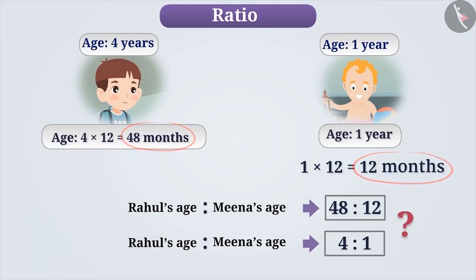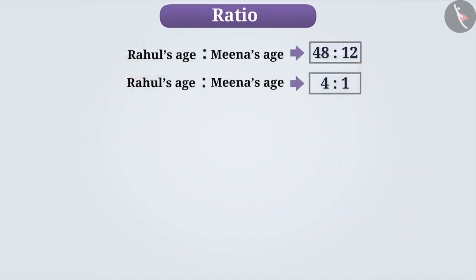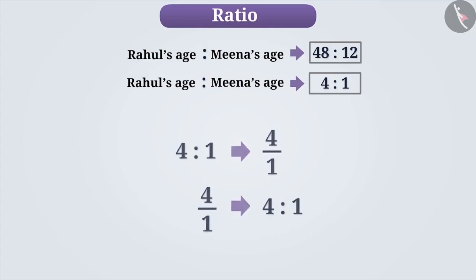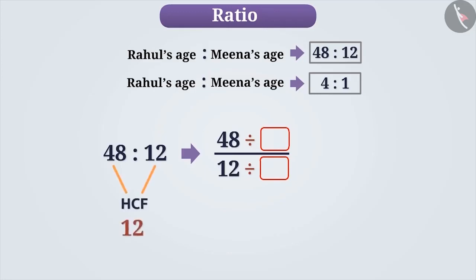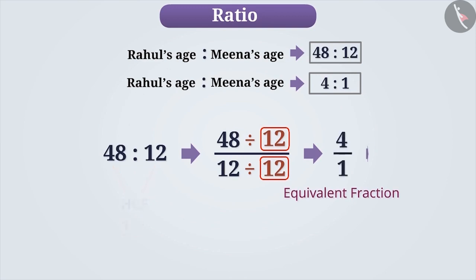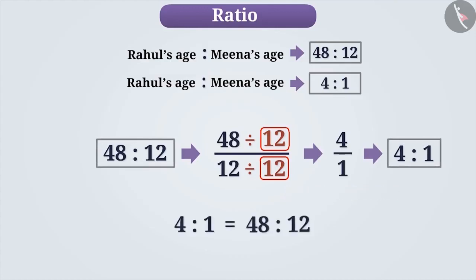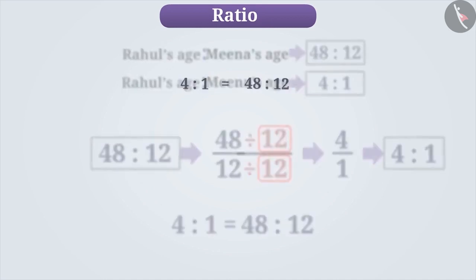For your information, we can represent any ratio in the form of a fraction and any fraction in the form of a ratio. Therefore, we can write 48 is to 12 as 48 by 12. We can get an equivalent ratio by multiplying or dividing the numerator and denominator by the same number. Since the HCF of 48 and 12 is 12, we divide both the numerator and the denominator by 12. By doing so, we get the equivalent fraction as 4 by 1, which can be written in ratio form as 4 is to 1. Thus, 4 is to 1 is equal to 48 is to 12. If two ratios are equal, we can say that they are equivalent ratios.